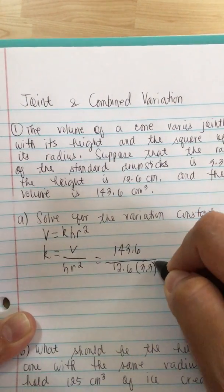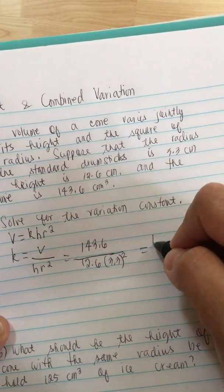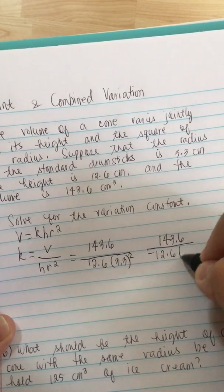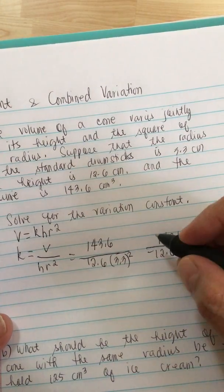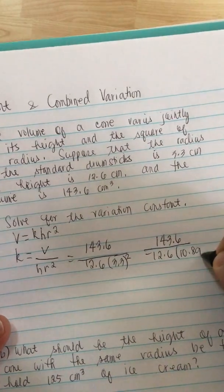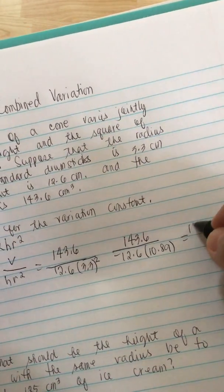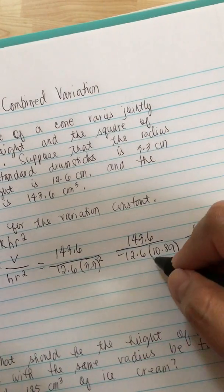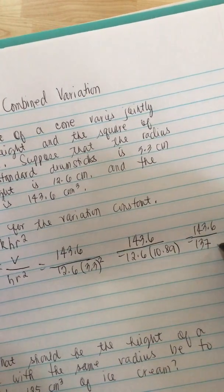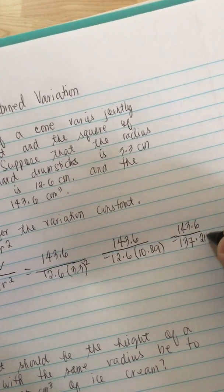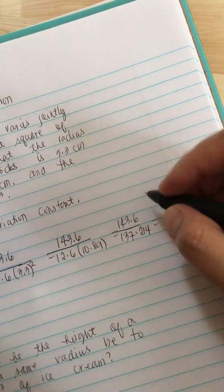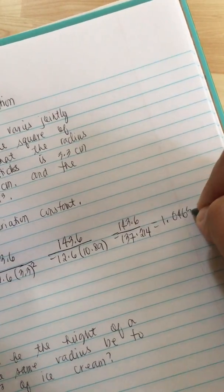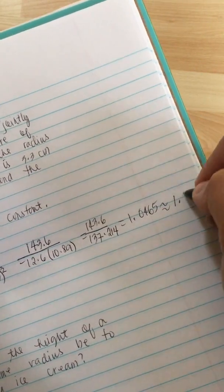Now we square this, so 3.3 squared equals 10.89. This is equal to 143.6 over 12.6 times 10.89, which is 143.6 over 137.214. This equals 1.0465 or approximately 1.05.